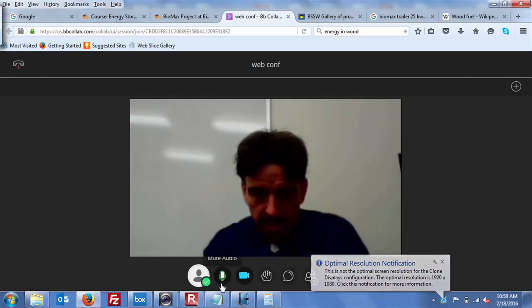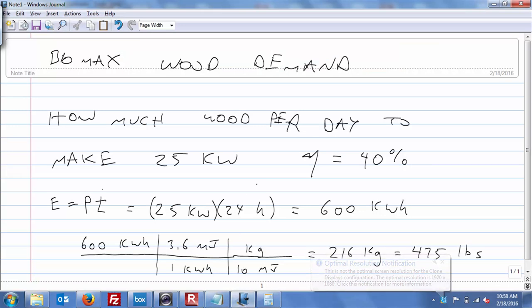So let's take a look. All I'm looking for is just a ballpark. Here's how I did it. I started with energy is power times time. We're looking at 25 kilowatts running for 24 hours, so you need 600 kilowatt hours of energy per day.